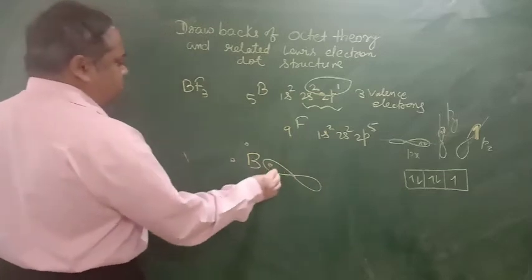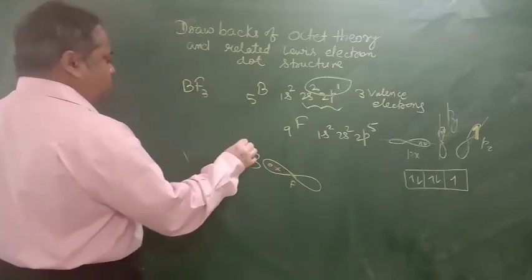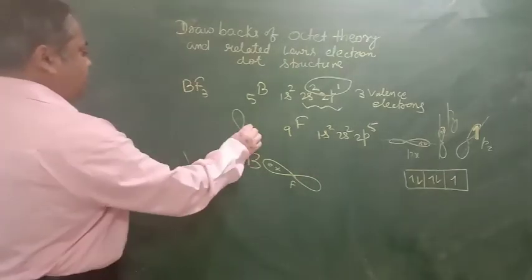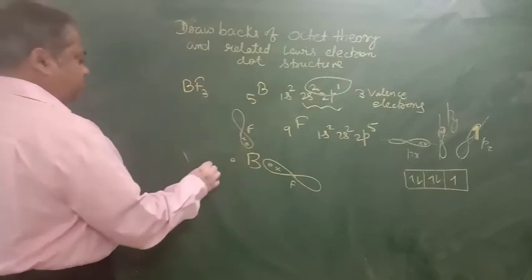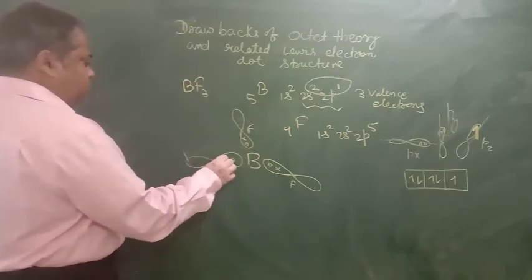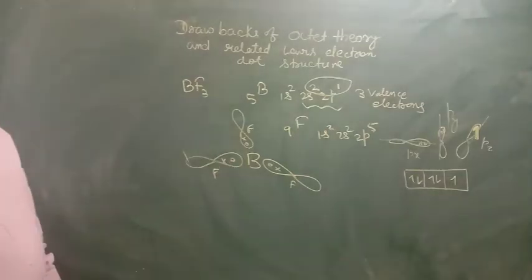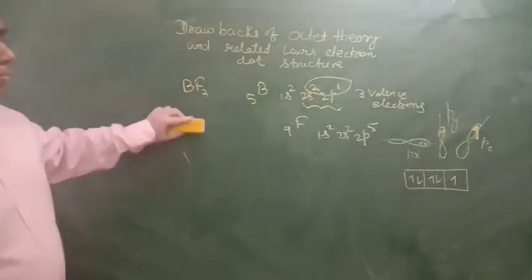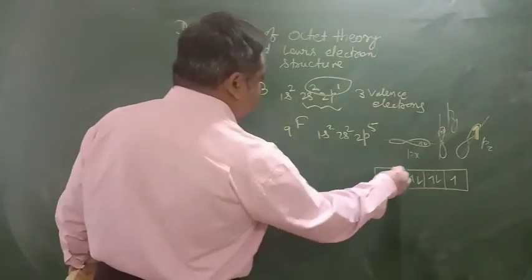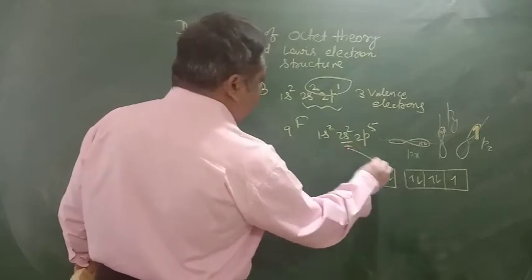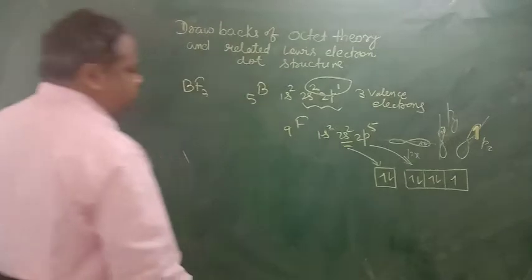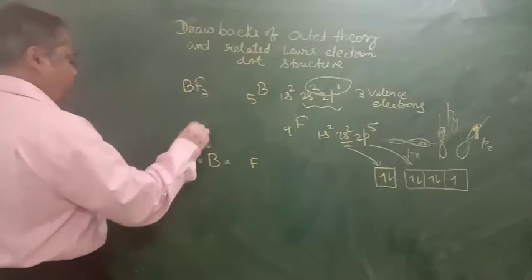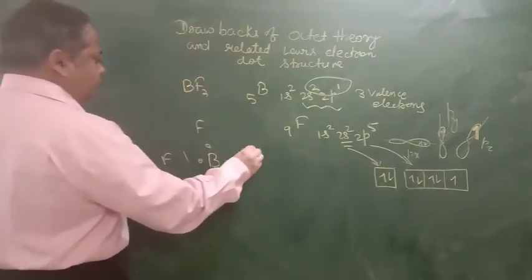Forms bond like this. BF3 from electron dot structure is shown like this: boron with 3 electrons and fluorine atoms with 7 electrons.